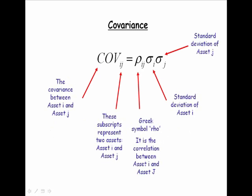The covariance between assets I and J is represented by this formula. Notice the subscripts here — it says I and J. These subscripts represent the returns of two assets, asset I and asset J.